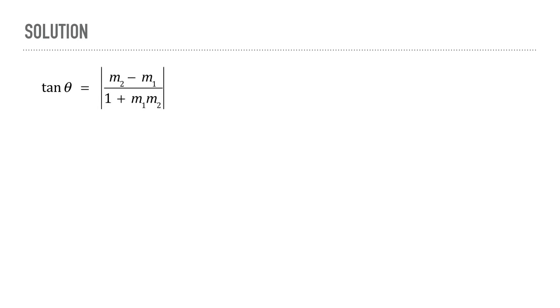We can now use this formula to find the tan of the acute angle between the two tangents. Plugging in for m₁ and m₂, we get |m₂ - m₁|/|1 + m₁m₂|, which simplifies to an expression equal to 3. Therefore, tan θ = 3, or θ = tan⁻¹(3). The correct answer is option A.